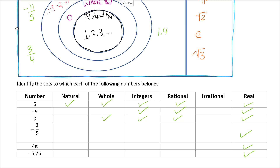Negative three-fifths is rational because it can be written as a fraction, and it's real. Pi is a dead giveaway for irrational — it has a symbol, it never stops, it never repeats — so pi is irrational and real.